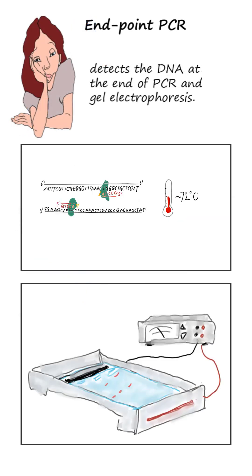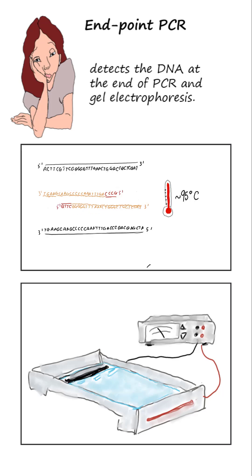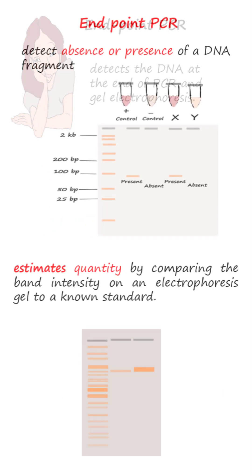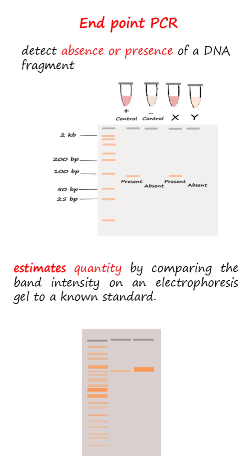The basic or endpoint PCR method's results can only be observed at the end of PCR and gel electrophoresis. This PCR method is generally used to detect the absence or presence of a DNA fragment of an expected size. A quantity estimation may be made by comparing the amplified band's intensity on an electrophoresis gel to a known standard.